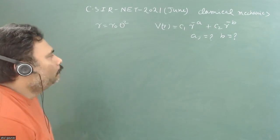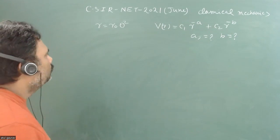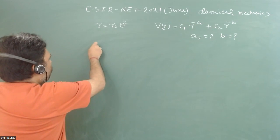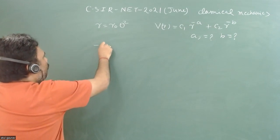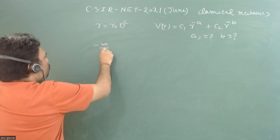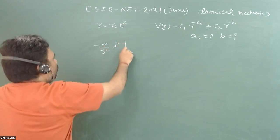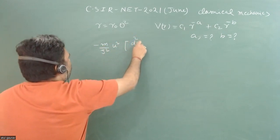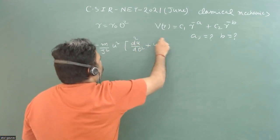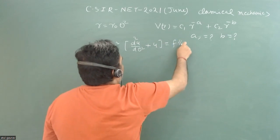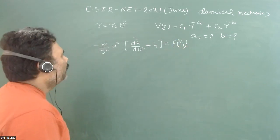So obviously, we have to directly go for our differential equation of orbit, and this is nothing but m j square u square d square u upon d theta square plus u is equal to f1 by u. So this is our differential equation of orbit.